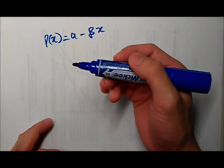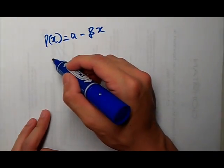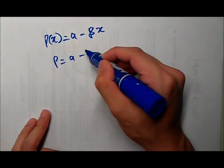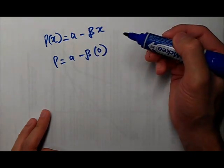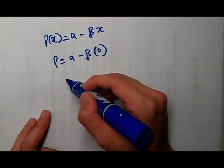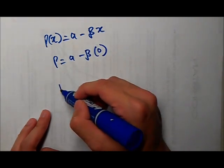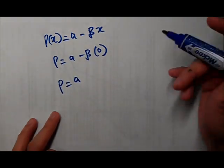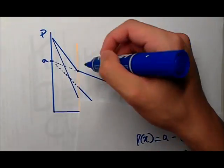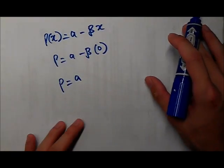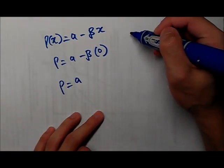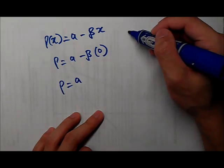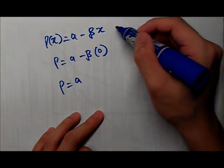Now, at the P axis, we know that X equals to zero. So, P equals to A minus B multiplied by zero. Then, you're going to solve for P. So, P equals to alpha. We know that this point is going to be alpha. It's going to be the same for this guy. Let's work out the formula for MR.